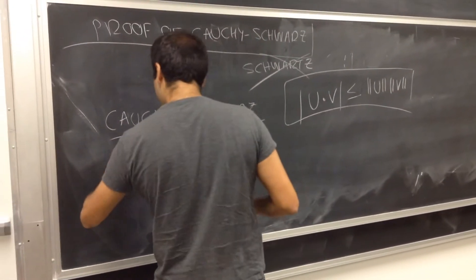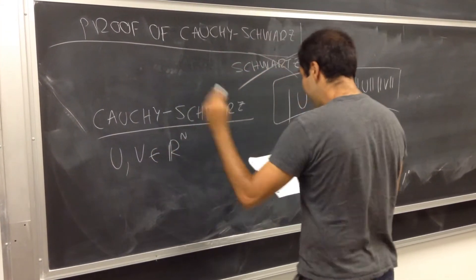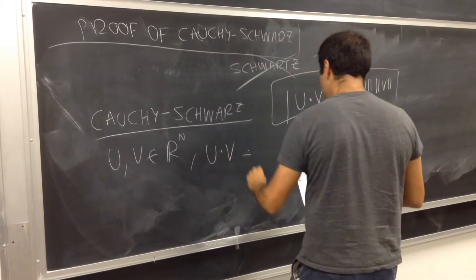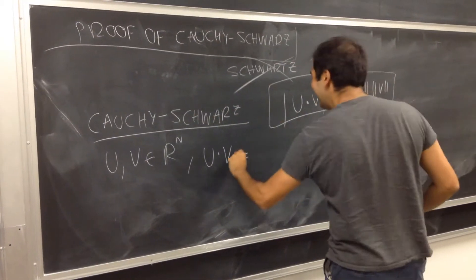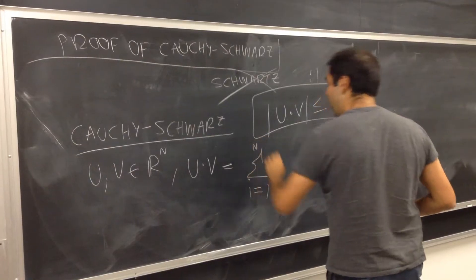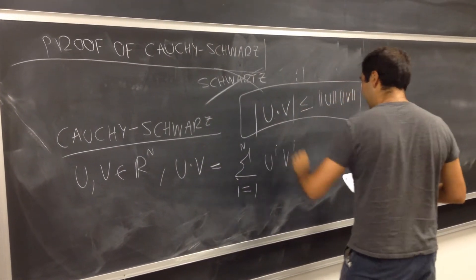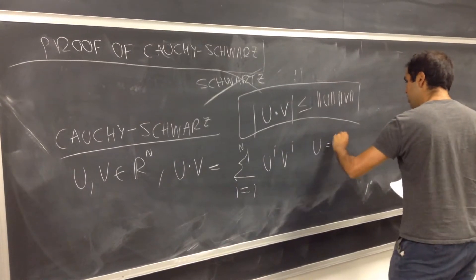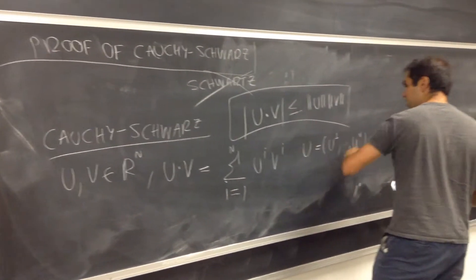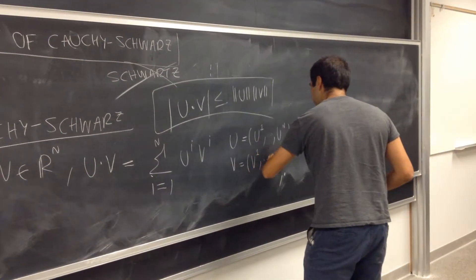And let me remind you, u, v are two vectors in R^n, and the dot product is just, here we go, is the sum of the products of each component. So u_i v_i, where again, u is u_1 up to u_N, v is v_1 up to v_N,